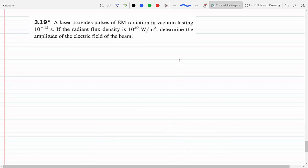Yeah, that's right, we don't need the time. The radiant flux density, watts over meters squared, that is already the irradiance, isn't it? Which is the time average magnitude of the Poynting vector.